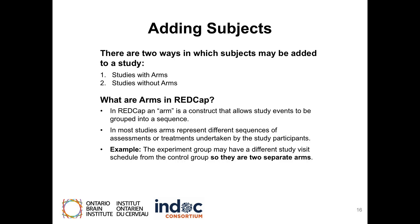Studies with arms and studies without arms have two different processes. In REDCap, an arm is a construct that allows study events to be grouped into multiple distinct sequences. In most studies, arms represent different sequences of assessments or treatments undertaken by the study participants. For instance, the experiment group will have a different study visit schedule from a control group.